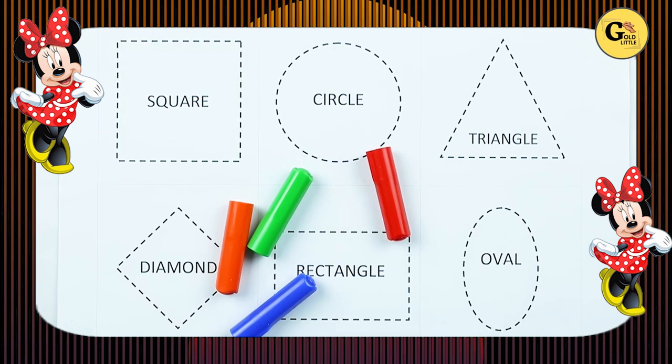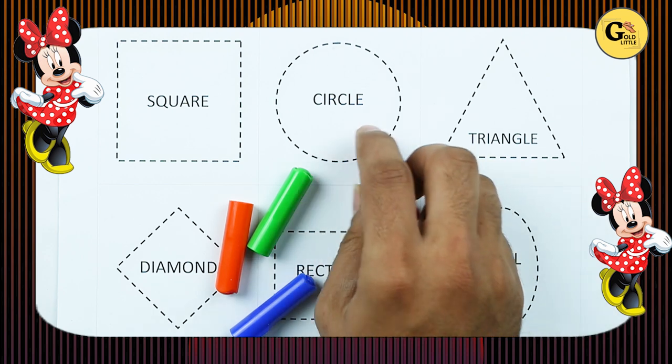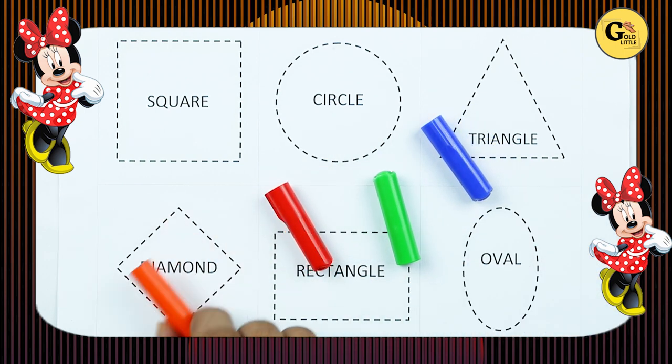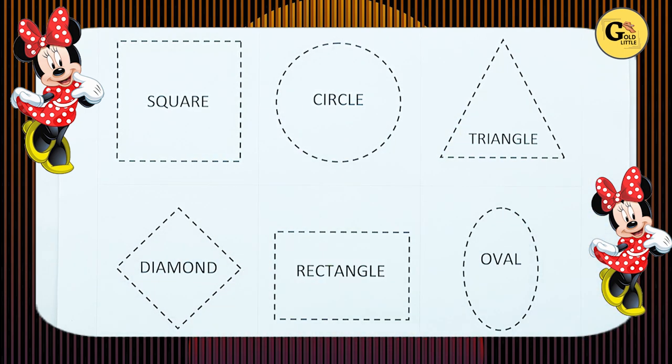Hello friends, today we learn shapes: square, circle, triangle, diamond, rectangle, oval with colors - red color, blue color, orange color, green color. Let's start.